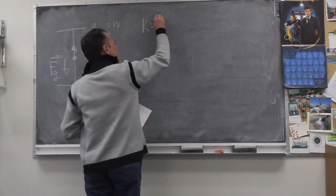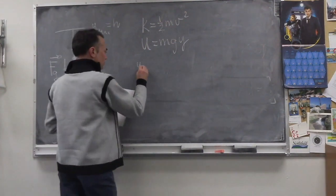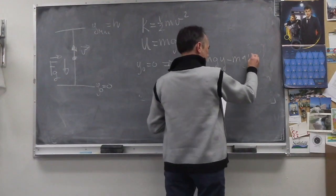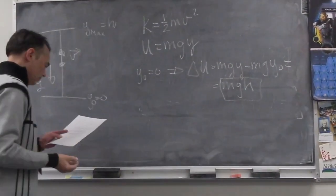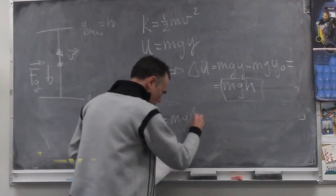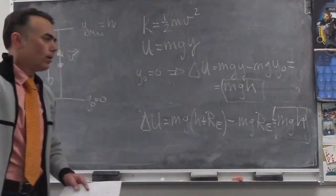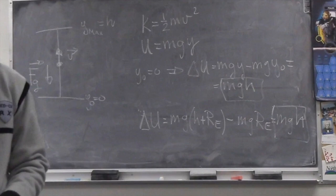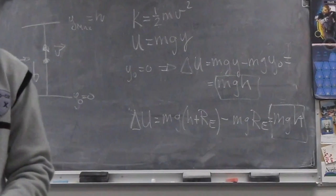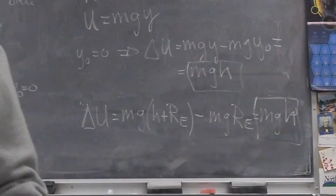We found an equation for the difference in potential energy. We are always going to measure differences in potential energy. We can choose our origin of coordinates wherever we want. If we assume that y₀ is zero, then the change in potential energy is given by mgh, where h is the height gained by the object. If we choose the origin of coordinates to be at the center of the Earth, then the final y is the height plus the radius of the Earth, and the initial y is the radius of the Earth. This still leaves us with the difference in potential energy equal to mgh.